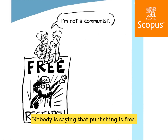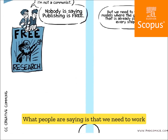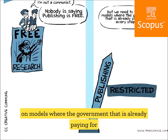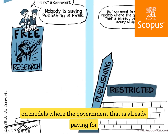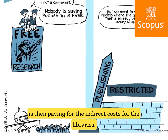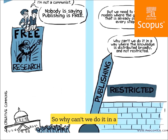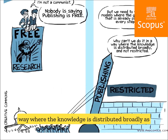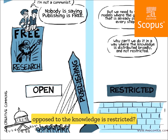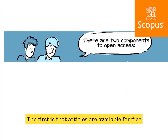Nobody is saying that publishing is free. What people are saying is that we need to work on models where the government — which is already paying for the research, then paying for the subscriptions, then paying for the indirect costs for the libraries — in the end, taxpayers and the government are paying for all of this. So why can't we do it in a way where the knowledge is distributed broadly, as opposed to being restricted?